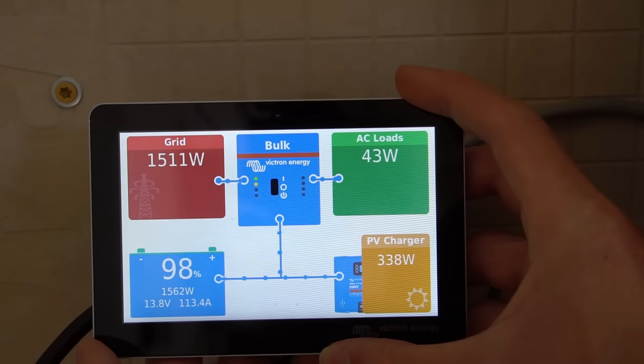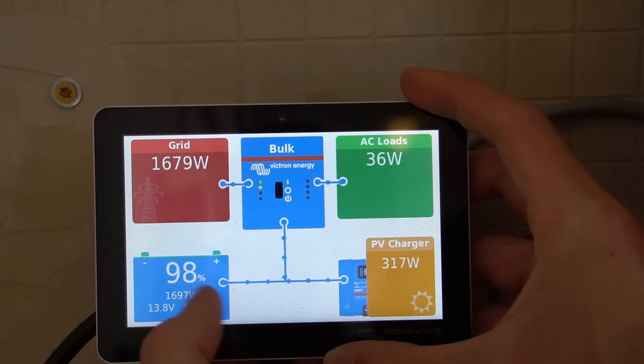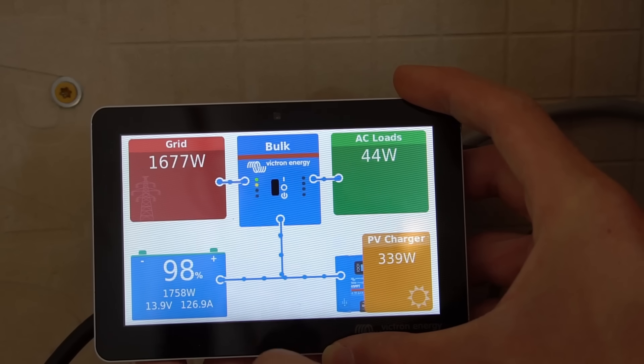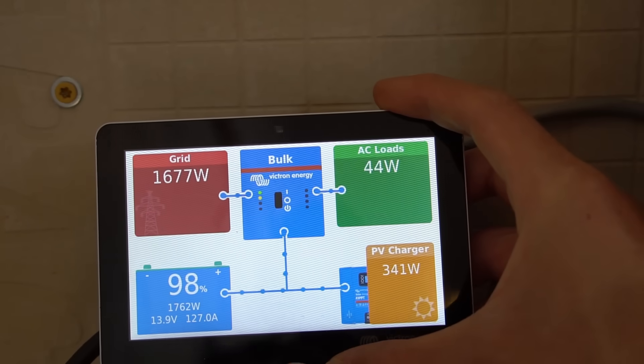Let's connect the AC input and see what happens. Oh, there we go. And we are charging. So notice how much power is coming from the grid into the battery. It shows you the voltage, the current, how many watts for the AC loads. It shows you all sorts of cool stuff.